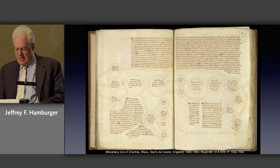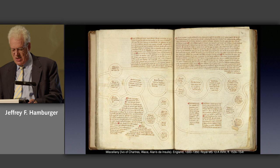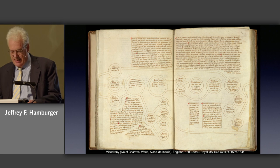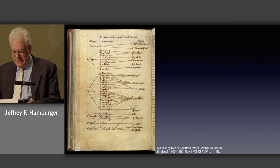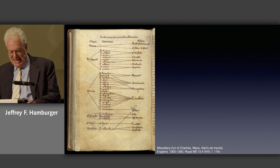Within the manuscript, a genealogical diagram devoted to the kings of England follows a format reminiscent of Peter of Poitiers' Compendium of Biblical History. Text remains subservient to the dictates of the diagram. The same section devotes a page to a diagram of the Heptarchy, the seven kingdoms of Anglo-Saxon England: East Anglia, Essex, Kent, Mercia, Northumbria, Sussex, and Wessex.